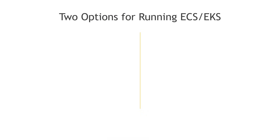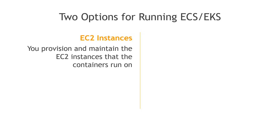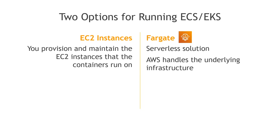There are two ways you can run either ECS or EKS, meaning two different ways to set up the underlying infrastructure that the containers will run on. You can run them with EC2 instances, where you have to provision and maintain the EC2 instances that the containers run on, and then ECS starts and stops the containers. Versus with Fargate, which is another AWS service — this is a serverless solution where AWS handles the underlying infrastructure for you. You just choose the CPU and memory that you need, and then provisioning and maintaining the instances is all taken care of behind the scenes. It's the much easier option and is quickly becoming the more popular solution.